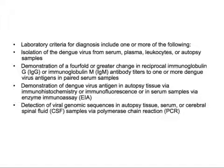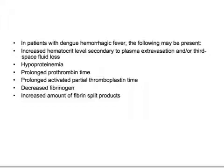Laboratory criteria for diagnosis include: isolation of dengue virus from serum, plasma, leukocytes, or autopsy samples; demonstration of fourfold or greater change in reciprocal IgG and IgM antibody titers to one or more dengue virus antigens; demonstration of dengue virus antigen via immunohistochemistry, immunofluorescence, or enzyme immunoassay; or detection of viral genomic sequence via PCR. In dengue hemorrhagic fever, expect increased hematocrit due to plasma extravasation, hyperproteinemia, prolonged prothrombin time, prolonged aPTT, decreased fibrinogen, and increased fibrin split products — indicating DIC (disseminated intravascular coagulation).